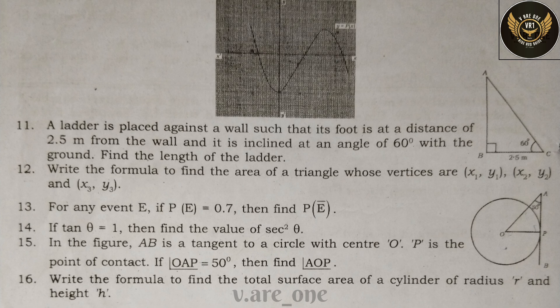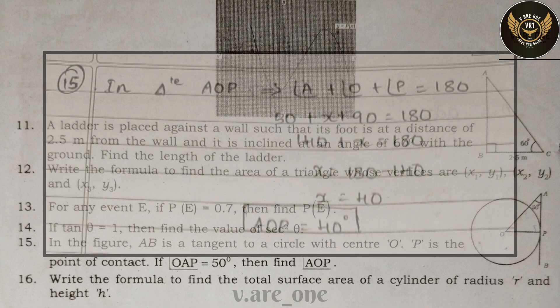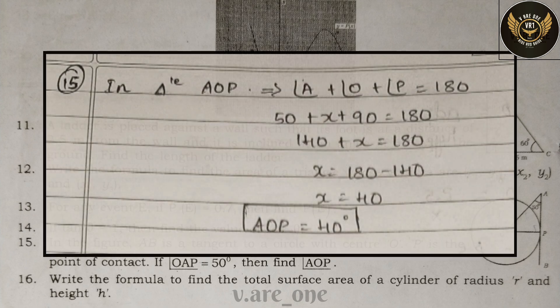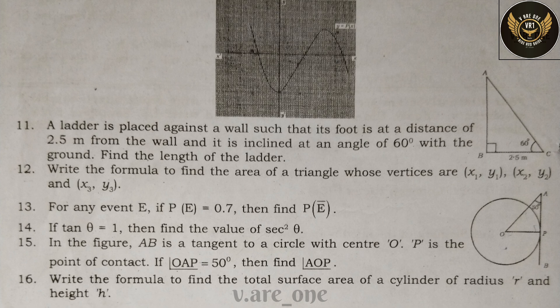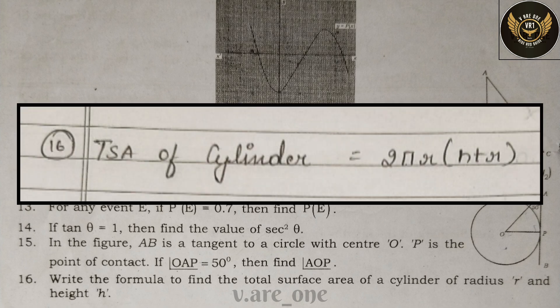In the figure, AB is a tangent to a circle with center O, and P is the point of contact. If angle OAP = 50°, then find angle AOP. Answer: angle AOP = 40°. Write the formula for the total surface area of a cylinder of radius r and height h. Total surface area of cylinder = 2πrh (plus end caps).